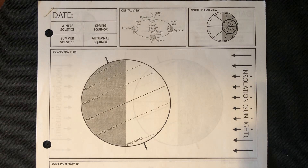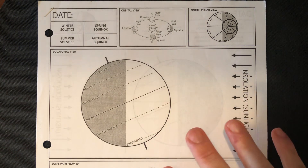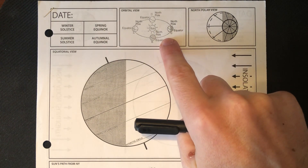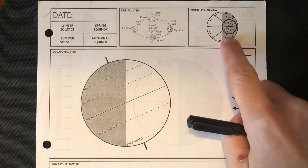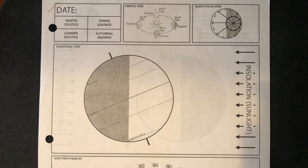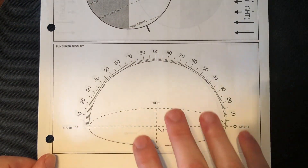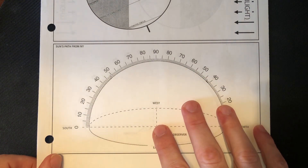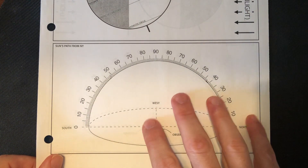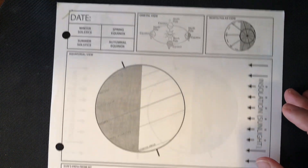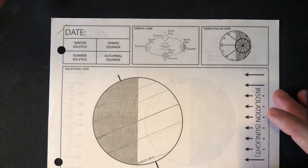I'm back today to show you the different perspectives of the Earth based on the different seasons: winter, spring, summer, and fall. You have to be able to identify the different seasons based on the orbital perspective, the North Pole perspective, the equatorial perspective, and you need to understand how to navigate the dome in which you're going to draw the sun's path. I'm hoping this is going to be a very effective tutorial on this pretty challenging topic.